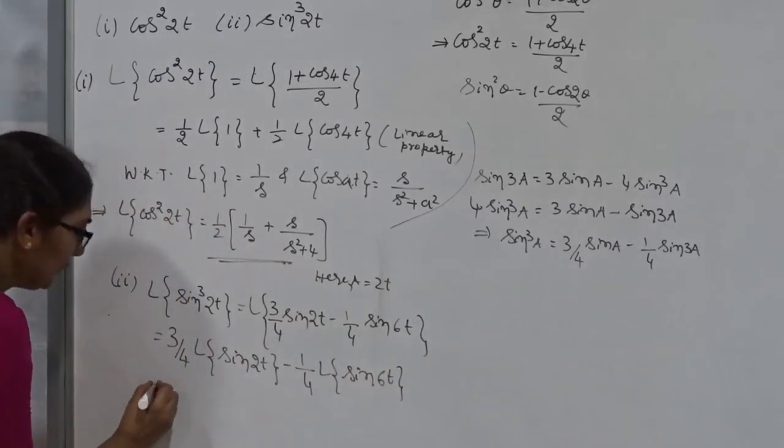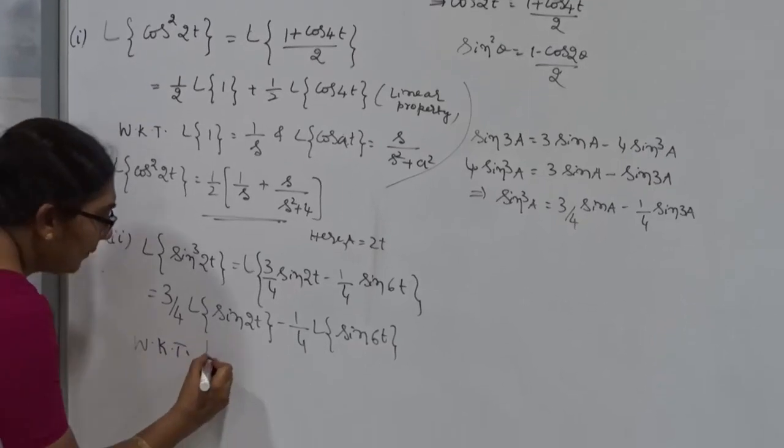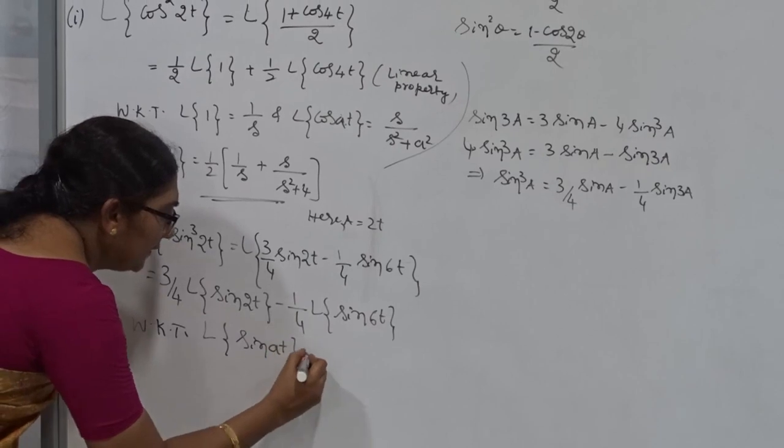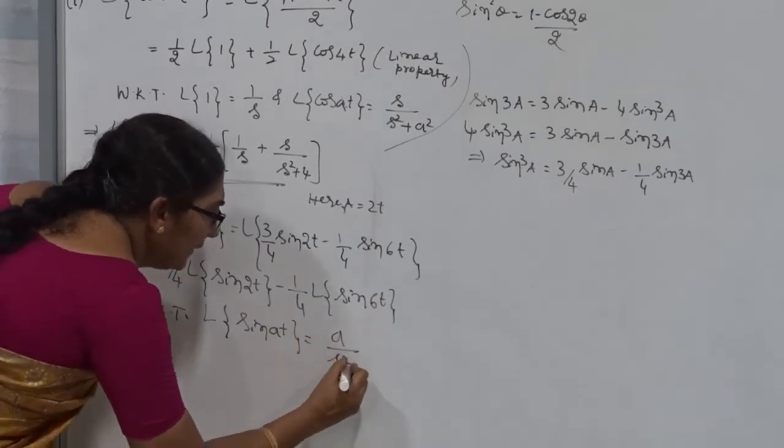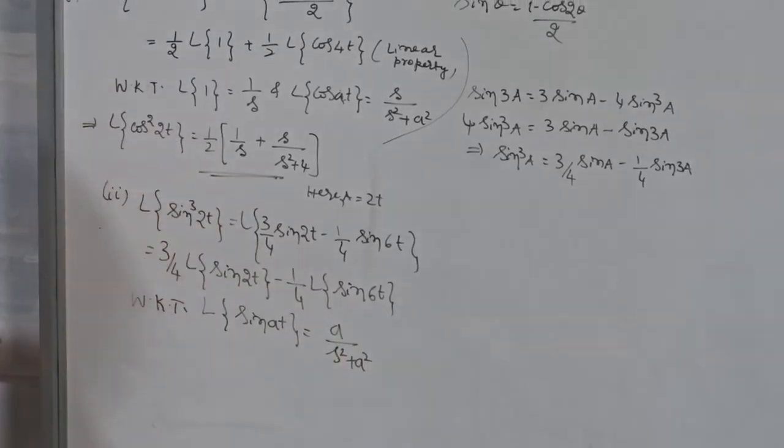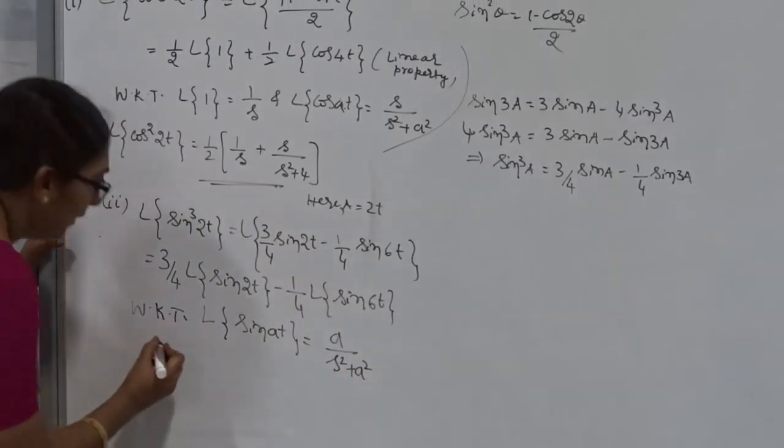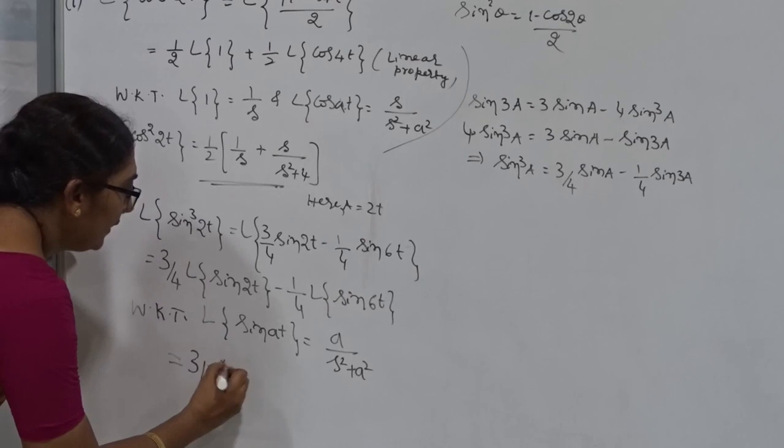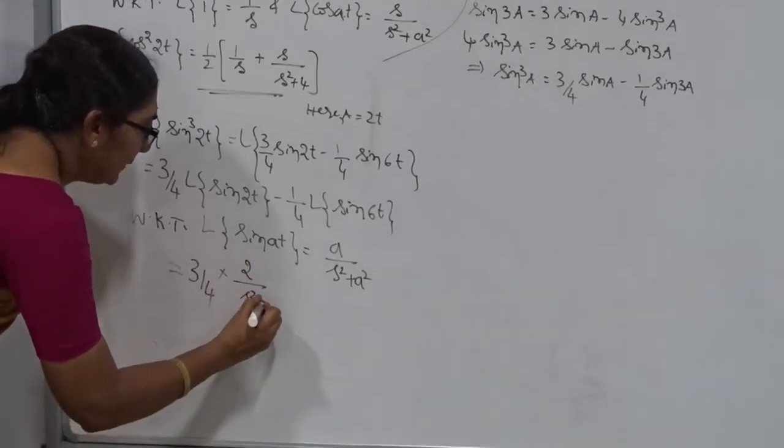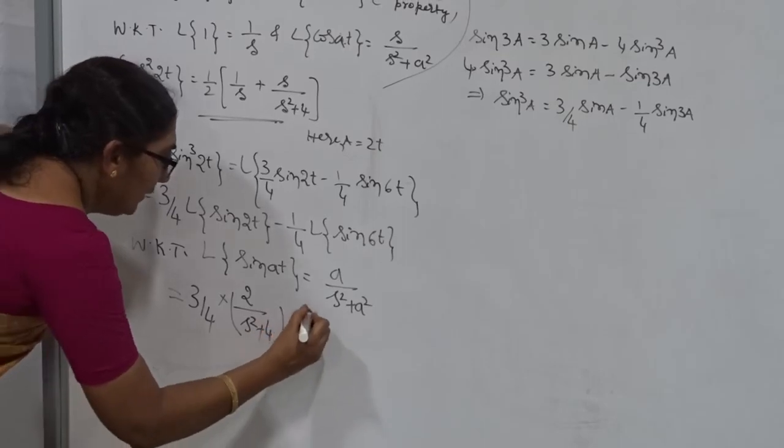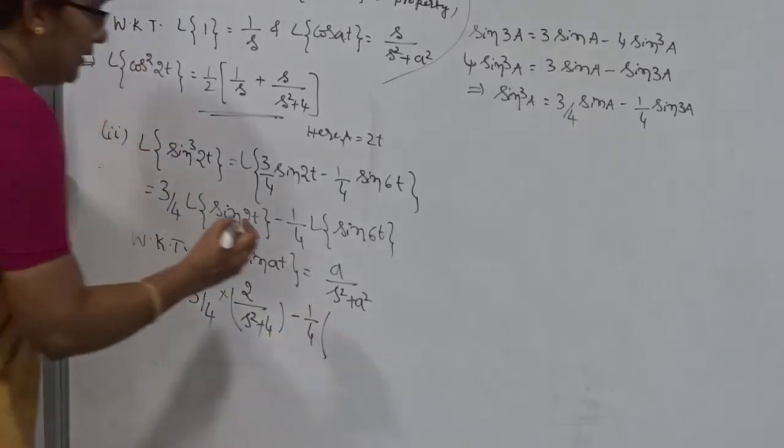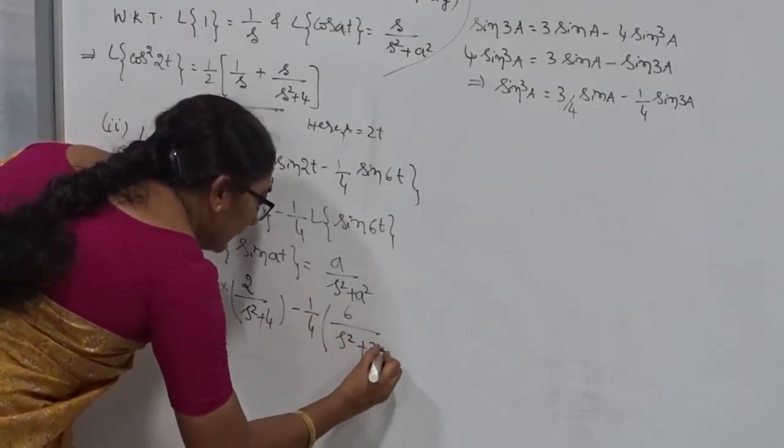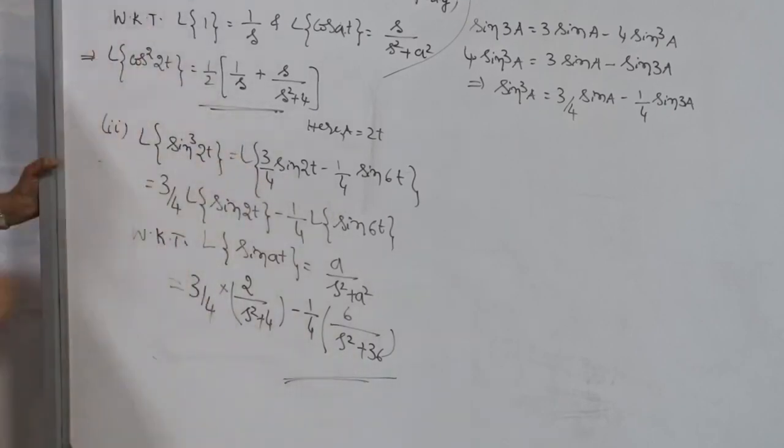The next, we are going to use the standard formula. We know that Laplace Transform of sine AT, what is sine AT? It is nothing but A by S² plus A². Don't confuse hyperbolic sine AT and cos hyperbolic sine AT formula. Now, 3 by 4 of, what we get actually, a is 2, so 2 divided by S² plus 2 square is 4. Minus 1 by 4, now, a is 6, so 6 divided by S² plus 36. This is the way to find out Laplace Transform of sine cube.